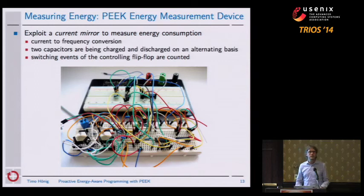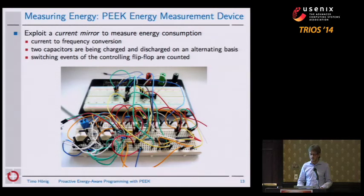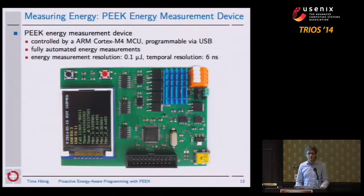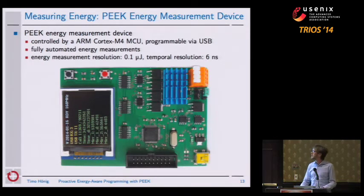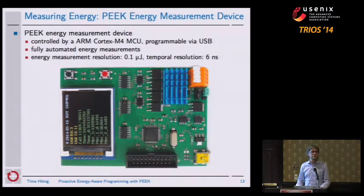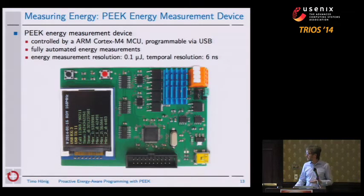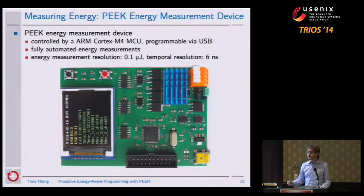The first prototypes were quite an adventure. This is one of the first actually working prototypes. We spent some more months on it and the final device looks like that — it's a fully-featured USB-powered measurement device which you can simply use with your computer. It comes with a Cortex-M4 microcontroller and the corresponding software to control everything, implementing fully automated energy measurements. Some technical data: it has an energy measurement resolution of 0.1 microjoule and gives a temporal resolution of 6 nanoseconds. That device is currently used in our group and other groups in Germany, and we will open source the schematics so that other groups can also use and modify the device.